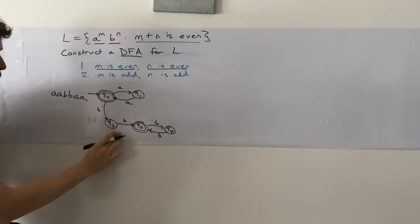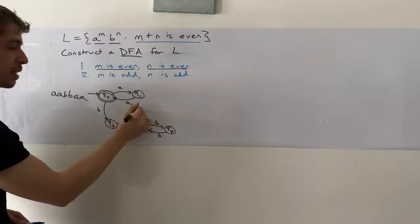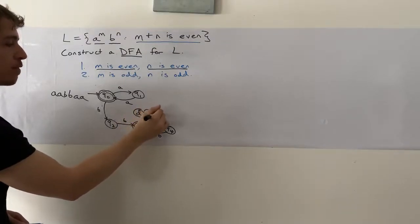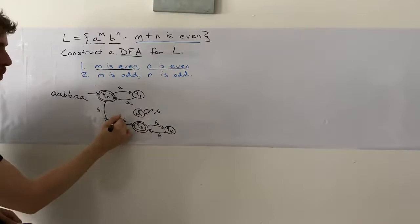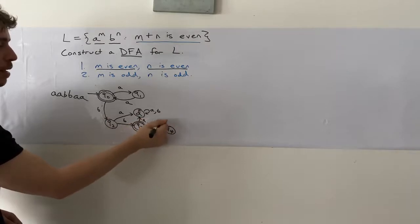So in fact, we can make a dead state for these. I'm going to call it D. That loops on everything, A and B, and transitions from each of these three states on A.